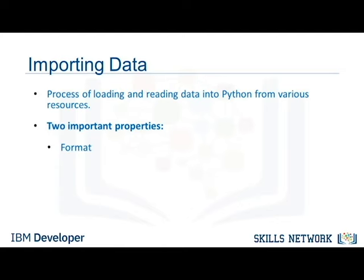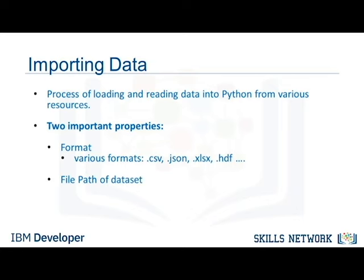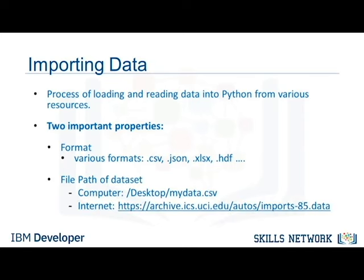Format is the way data is encoded. We can usually tell different encoding schemes by looking at the ending of the file name. Some common encodings are CSV, JSON, XLSX, HDF, and so forth. The path tells us where the data is stored — usually it is stored either on the computer we are using or online on the internet. In our case, we found a dataset of used cars which was obtained from the web address shown on the slide. When Jerry entered the web address in his web browser, he saw something like this.